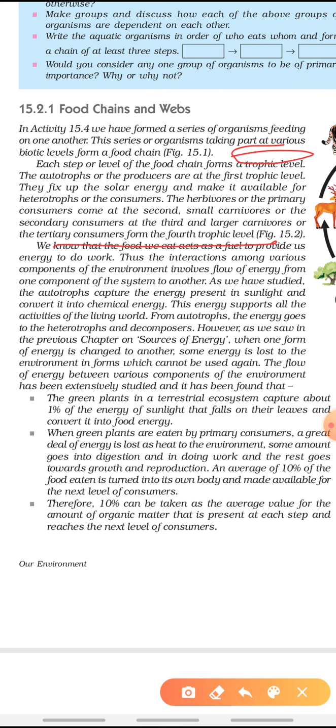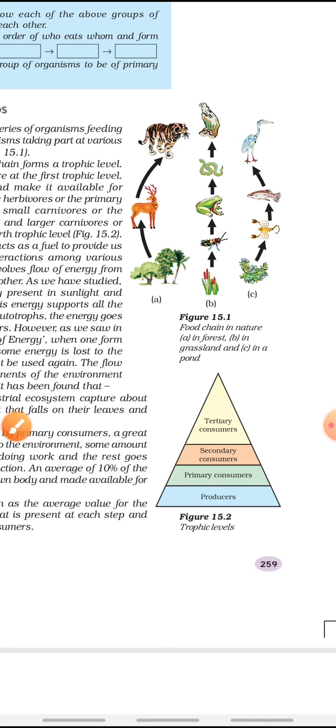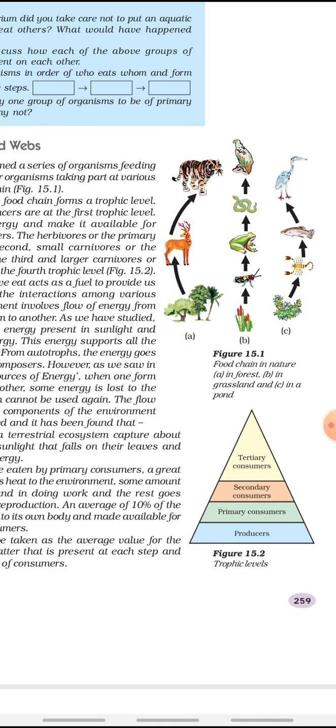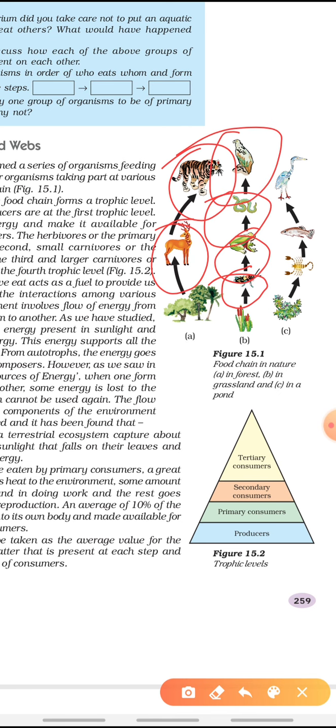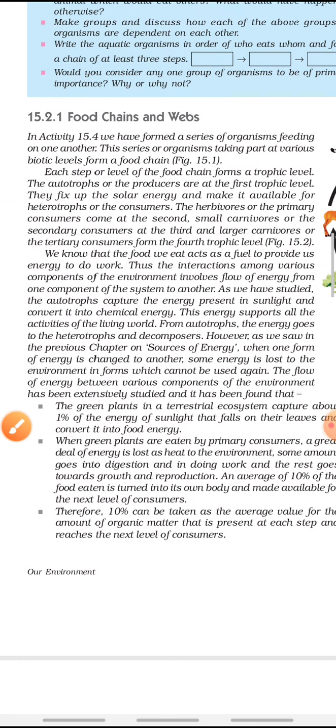The plant is fed upon by organisms. For example, here the deer is the primary consumer and tiger acts as a secondary consumer. Same here, grasshopper is the first primary consumer, then secondary consumer, tertiary consumer, and this is a quaternary consumer.